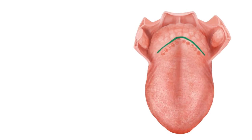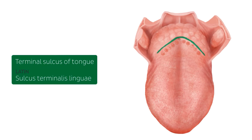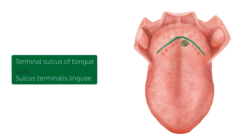The terminal sulcus is a v-shaped groove that separates the root and the body of the tongue. As you can see, the valate papillae run parallel to the terminal sulcus.